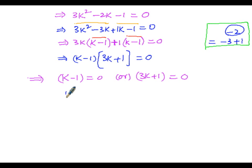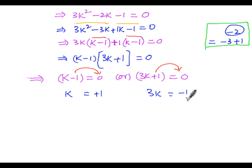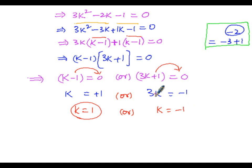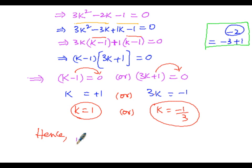Solving each equation: from k - 1 = 0, we get k = 1. From 3k + 1 = 0, transposing gives 3k = -1, so k = -1/3. Hence the values of k are k = 1 or k = -1/3.